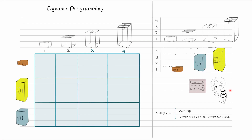In dynamic programming, almost every problem is solved using a grid. The columns represent discrete sizes — small capacities from the minimum item size up to the maximum bag capacity. Our minimum item size is one line and our maximum is four, so columns go from one to four. The rows represent the available items from which we want to get maximum benefit.